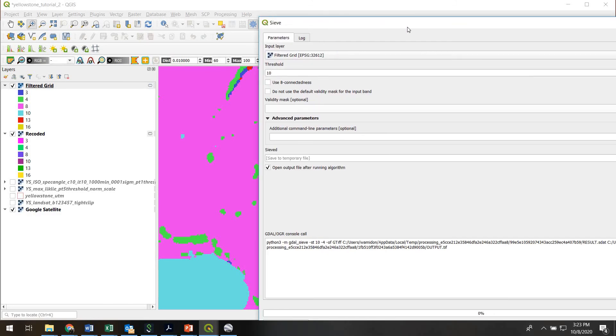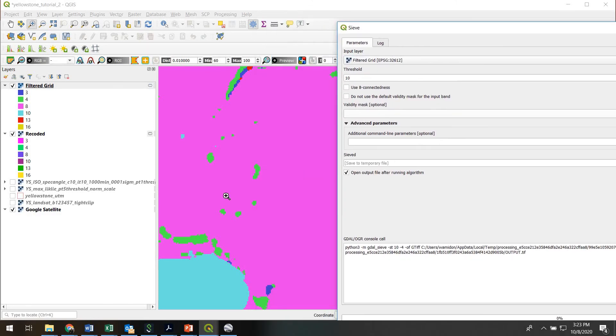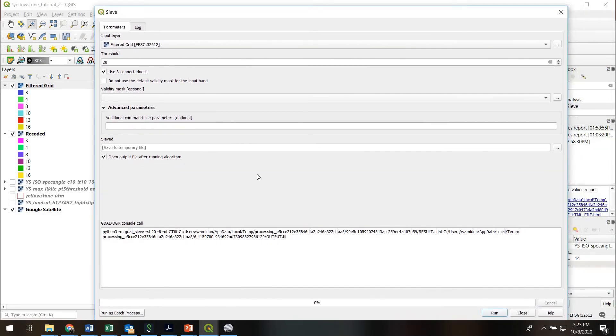We'll do the filtered one. Threshold size, what should we set the threshold size to? Just looking at some of these clusters, looks like some of these clusters maybe have nine or ten pixels in them. So let's try a threshold of say 20. So anything that has less than 20 pixels is gonna get sieved out. Let's use eight connectedness as our metric. We will leave the output as a temporary file and we'll go ahead.